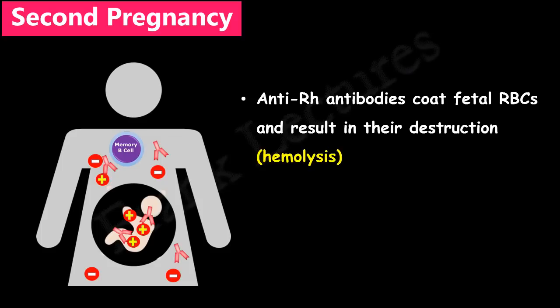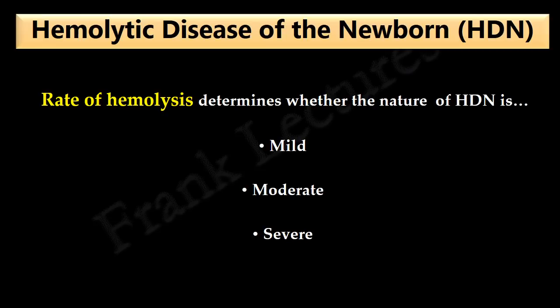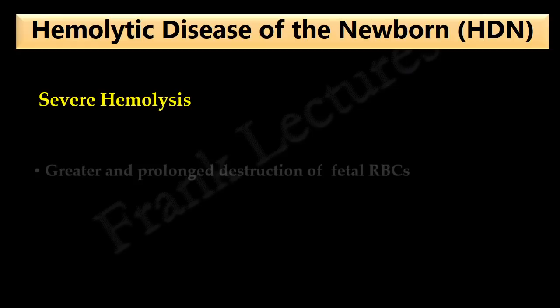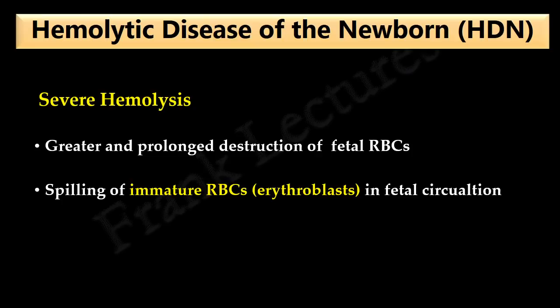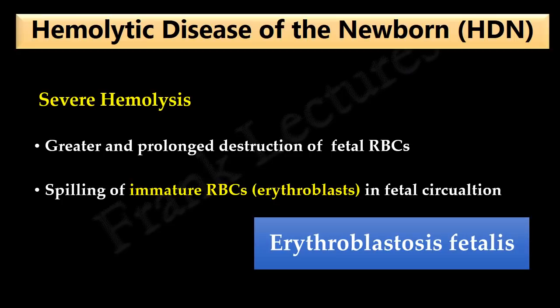Because of fetal red blood cell destruction or hemolysis, the baby will be anemic. The rate of hemolysis determines whether the disease is mild, moderate, or severe. If hemolysis is severe, there is greater and prolonged destruction of fetal RBCs, and the liver, spleen, and other organs of the fetus increase their production of RBCs to compensate. This results in spilling of immature RBCs known as erythroblasts into the fetal circulation — for this reason severe anemia in the fetus is known as erythroblastosis fetalis. Since this kind of severe anemia occurs in only a few cases, hemolytic disease of the fetus and newborn is the more appropriate term.